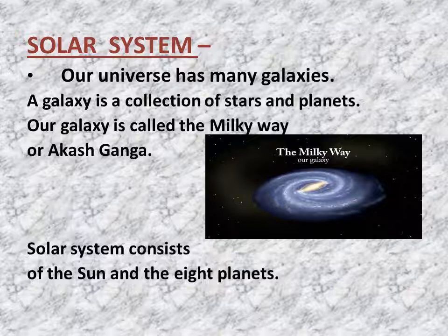You can see here in the picture how our galaxy looks. The Solar System consists of the Sun and the 8 planets.